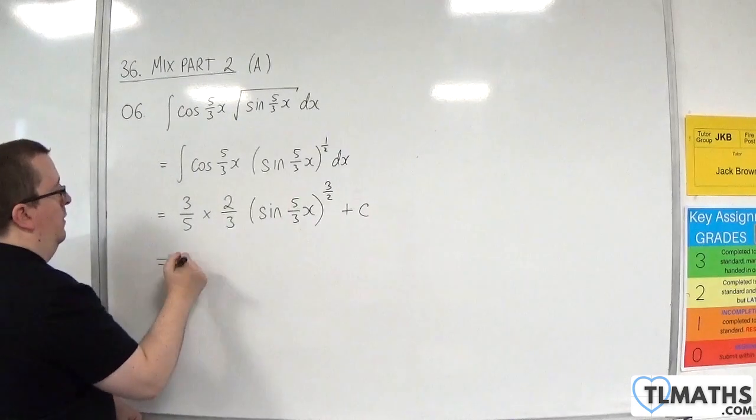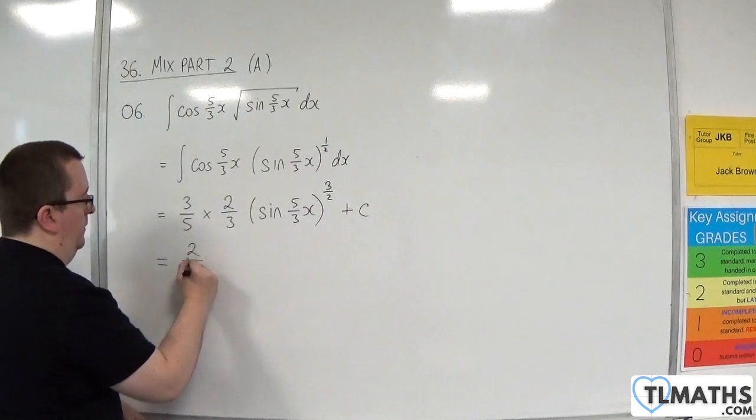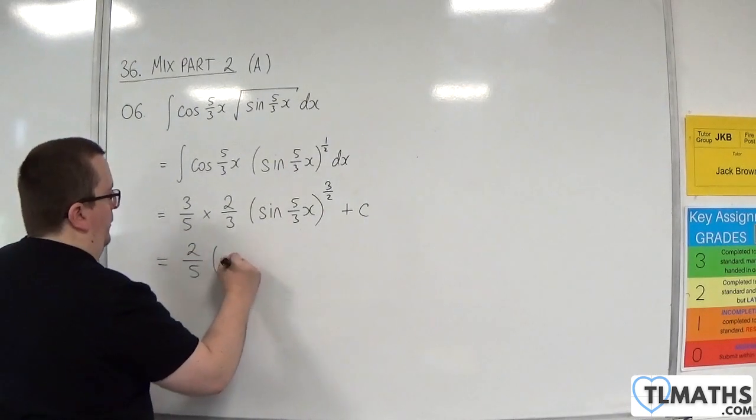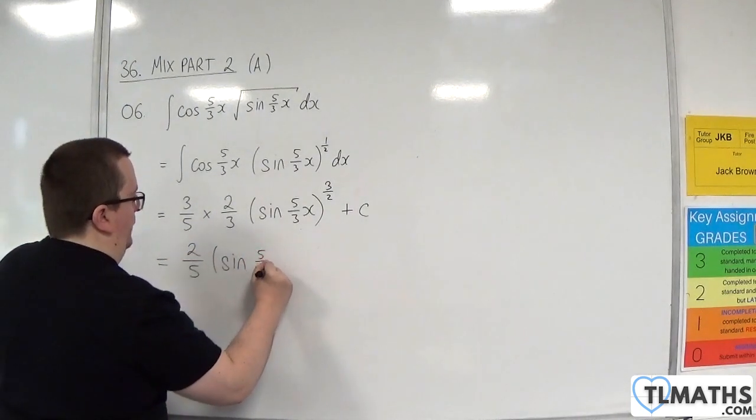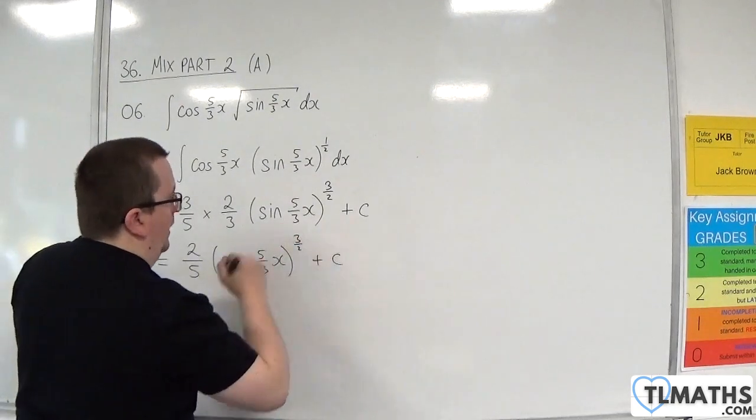And I've got to add 1 to the power. So 3 fifths times 2 thirds will be 2 fifths sine of 5 thirds x to the 3 halves plus c.